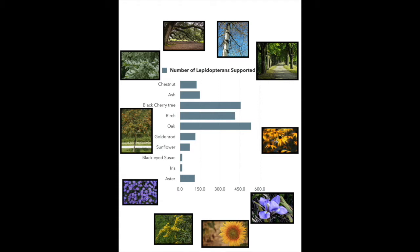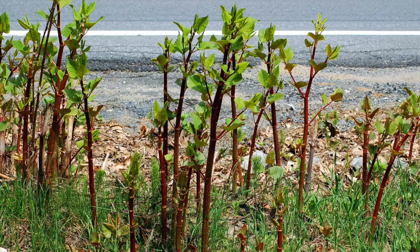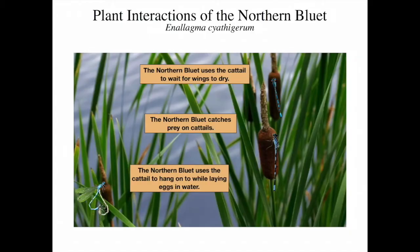Many animals depend on insects for food. If we lose insects, then the ecosystem may collapse. Native plants have been here for a long time and live in harmony with other species. On the other hand, invasive plants were introduced more recently and have a negative impact on local ecology. Insects need native plants because they only digest the chemicals in plants to which they have adapted.